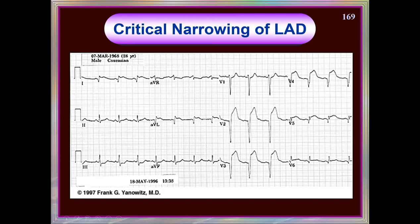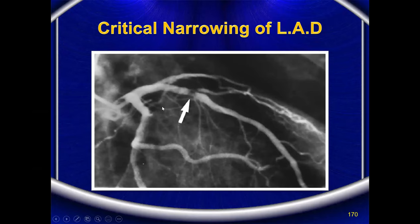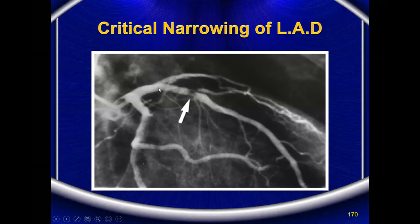The coronary angiogram of the same patient shows the LAD — left anterior descending artery — and the circumflex artery and the main left coronary artery. The LAD shows a complete critical narrowing with discontinuity in the dye — more than 90% of blood flow is obstructed. This is called critical narrowing and demands immediate revascularization.